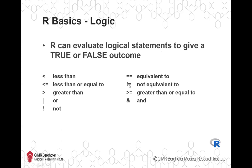One important concept to understand is logic. It might seem like a weird or not very useful thing if you're trying to do biostatistics, but logic is one of those basic skills that makes everything a lot easier. R can evaluate logical statements and give a true or false outcome, like all programming languages and computers. For example, a question might be: is this value less than this other value? R will evaluate that and say TRUE or FALSE. A logical statement is basically anything that can be answered as true or false.